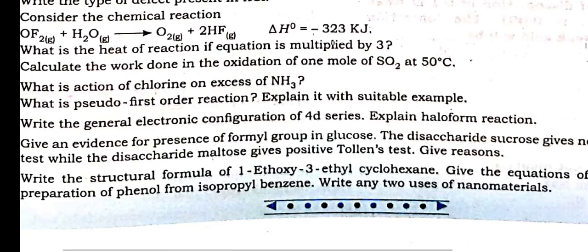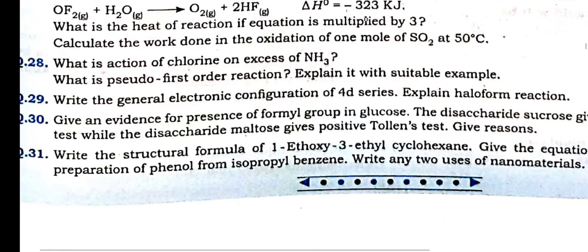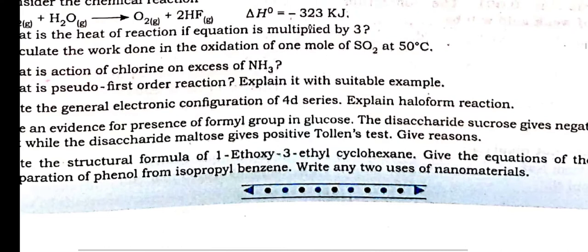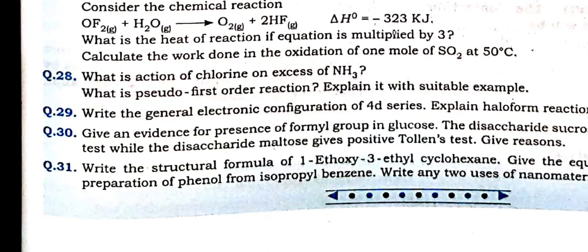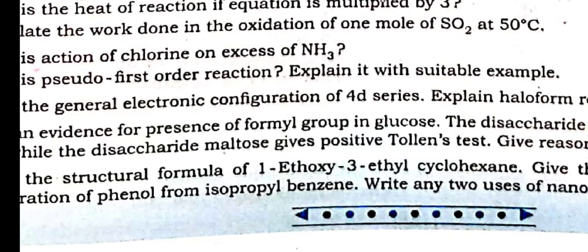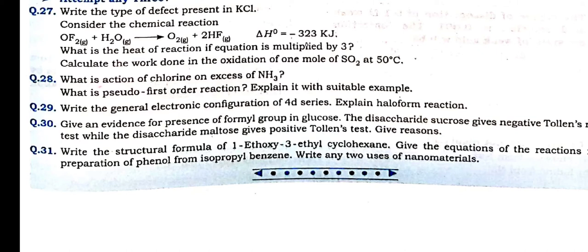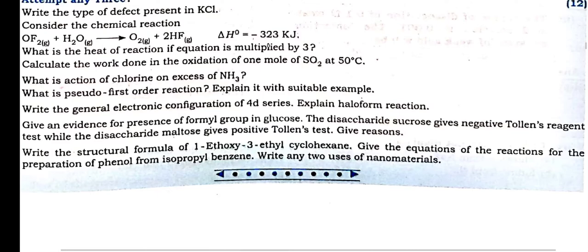Question 29: electronic configuration of 4d series. Explain the haloform reaction from aldehyde, ketone and carboxylic acid. Give evidence of the presence of the aldehyde group (CHO group) in glucose — one of the reactions of glucose. Hydrogen cyanide reaction also you can show. Disaccharide sucrose gives negative test for Tollens' reagent because no free carbonyl group — C1 and C2 carbon is packed in sucrose. Why does disaccharide maltose give positive test? Because of the presence of free aldehyde group. Draw the structural formula for 1-ethoxy-3-ethylcyclohexane. Give the equation of reaction for preparation of phenol from isopropyl benzene (cumene). Write two uses of nanoparticles.